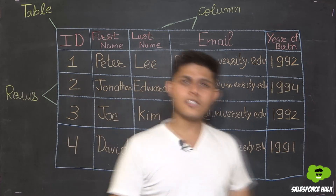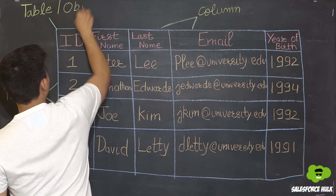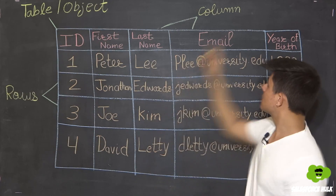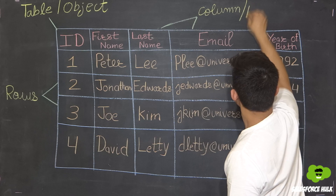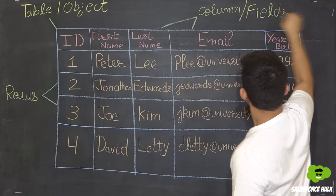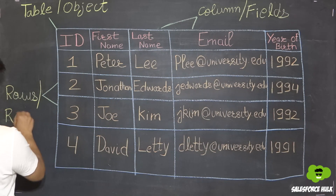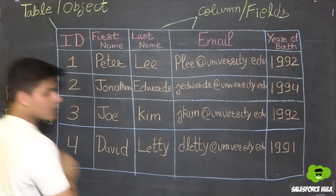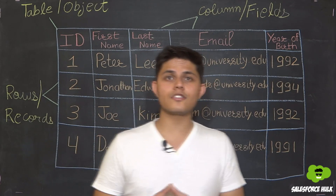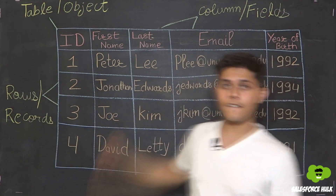Now let's talk about Salesforce. In Salesforce, we call this table an object, these columns as fields, and these rows as records. Look how easy the terminologies are in Salesforce: table is object, rows are records, column is a field.